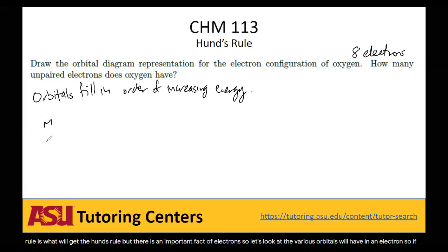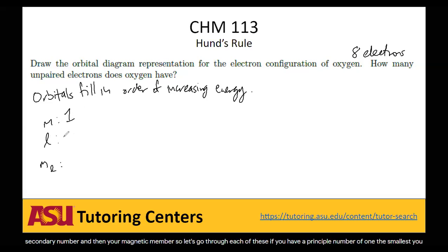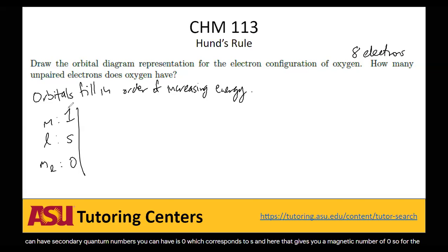The orbitals are based on your principal number, your secondary number, and then your magnetic number. If you have a principal number of one — the smallest you can have — the only possible secondary quantum number you can have is zero, which corresponds to s. That gives you a magnetic number of zero, so for principal number one there is really only one orbital: 1s only has one orbital.